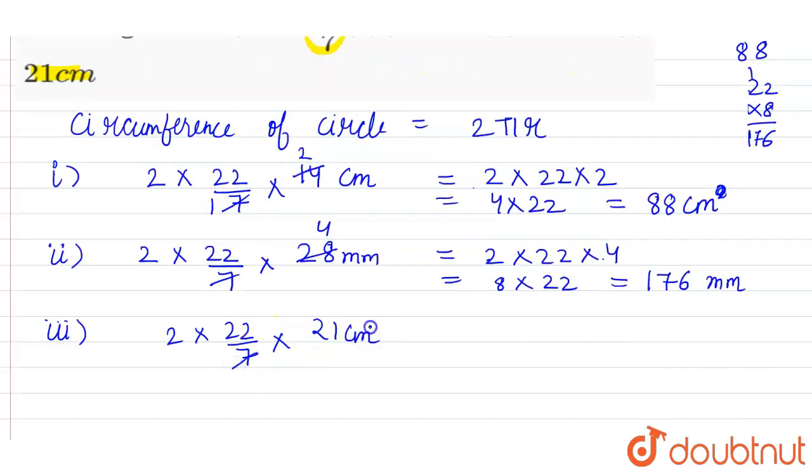So 7 × 3 is 21. Then 2 × 22 × 3: 2 × 3 is 6, then 6 × 22. Calculating 22 × 6: 6 × 2 is 12, then 6 × 2 is 12, carry 1 gives 13. So the circumference is 132 cm. Right?